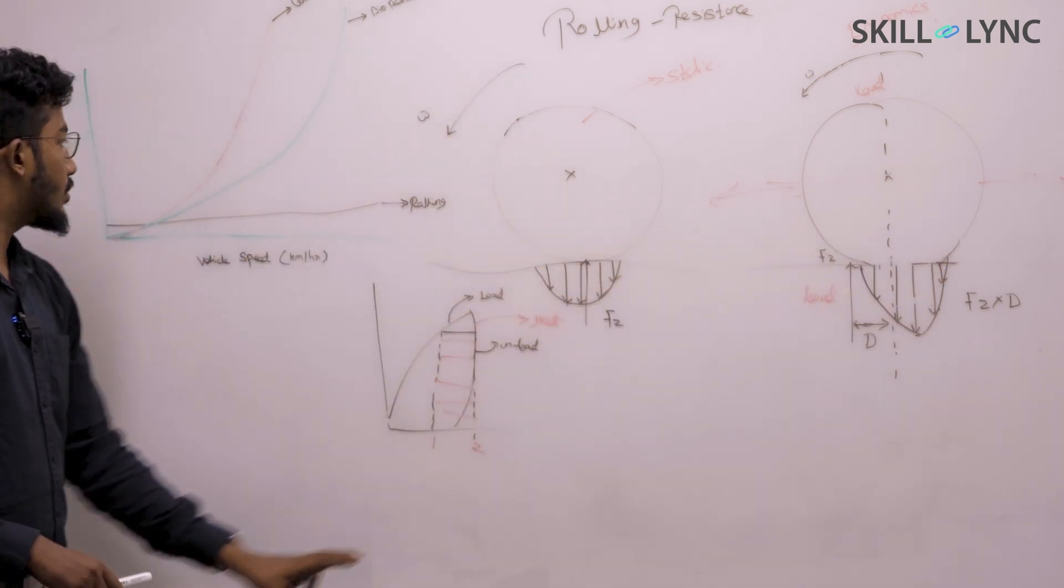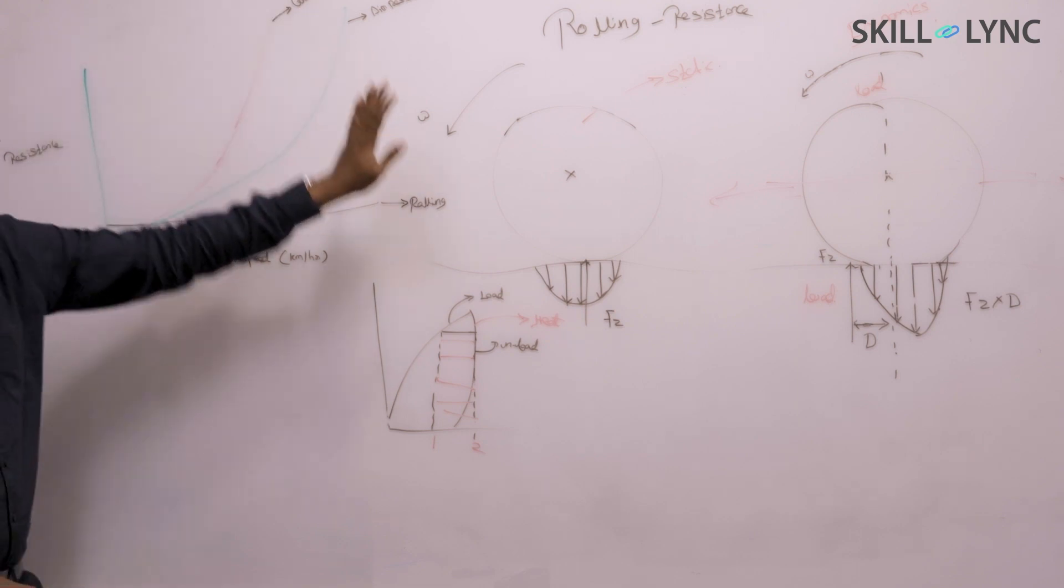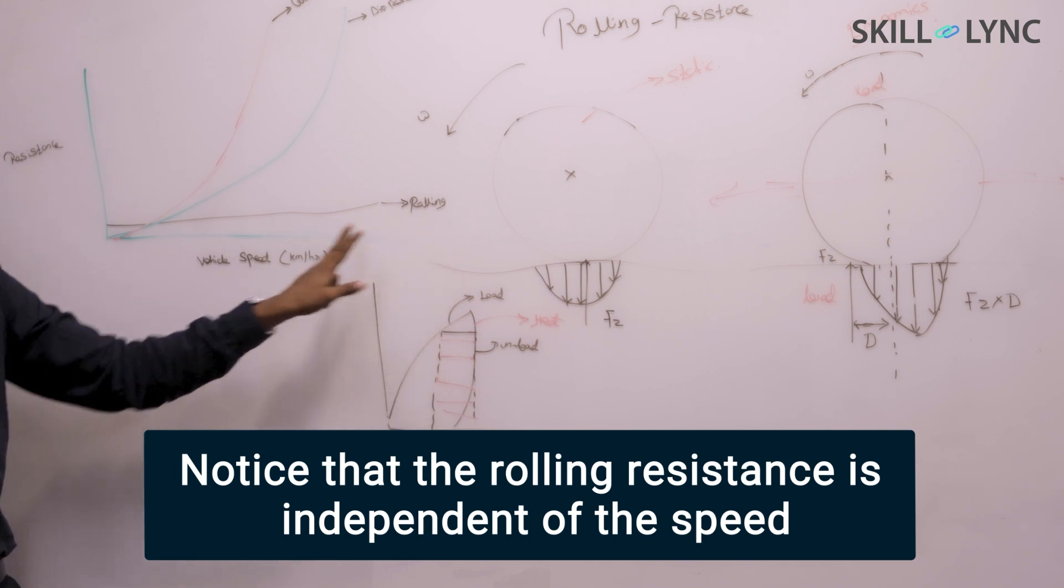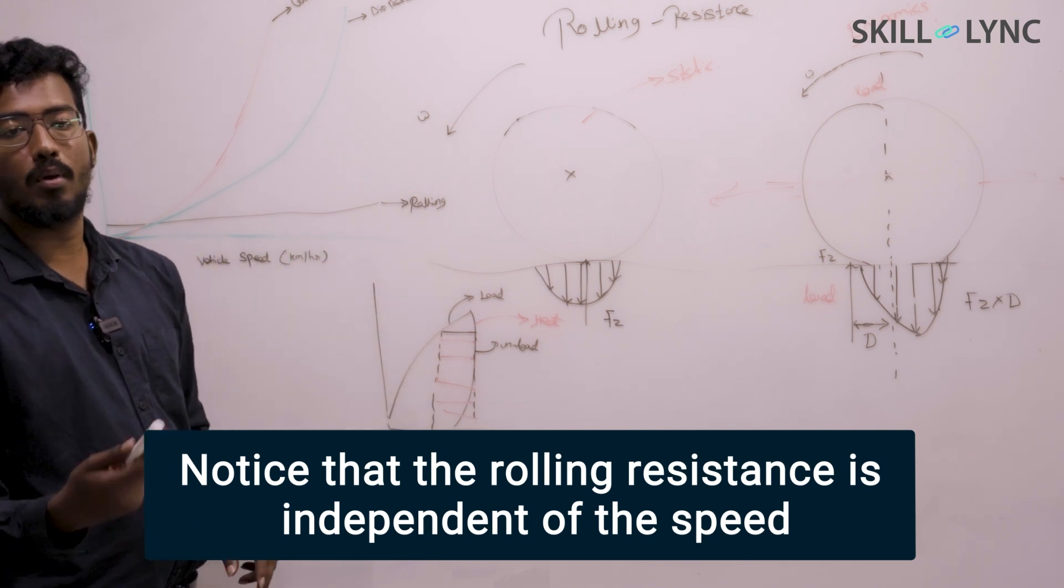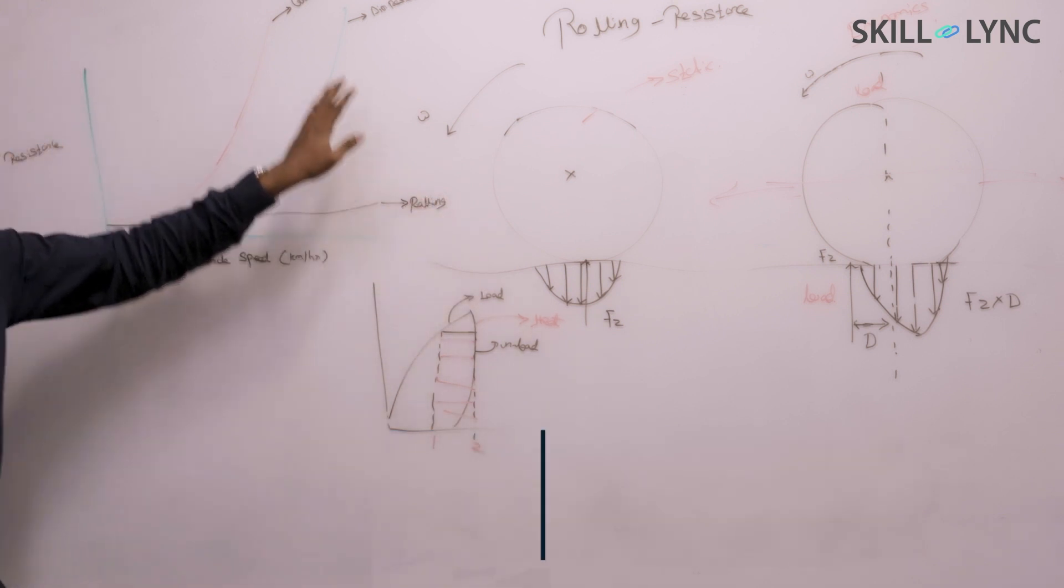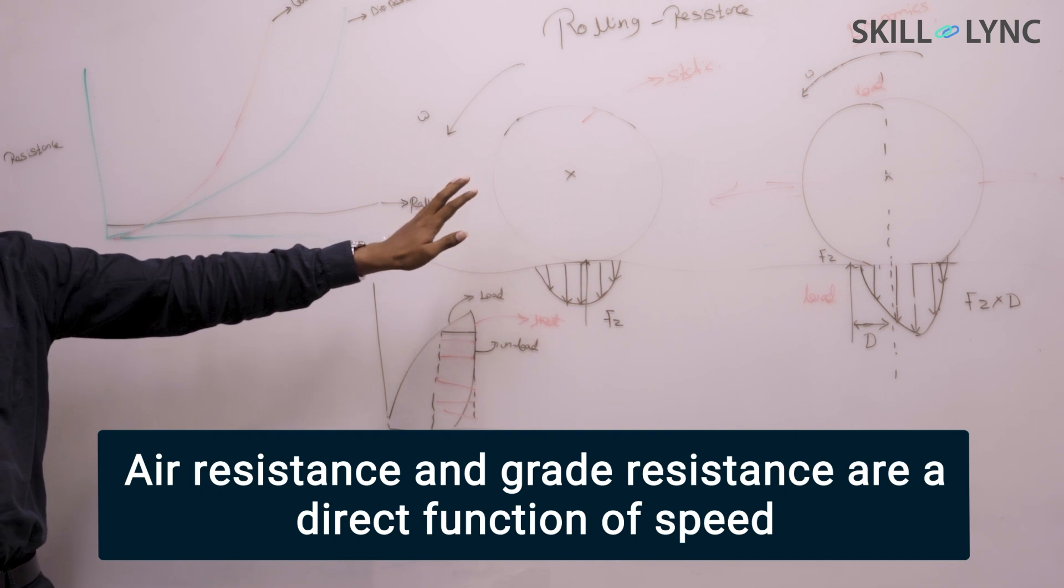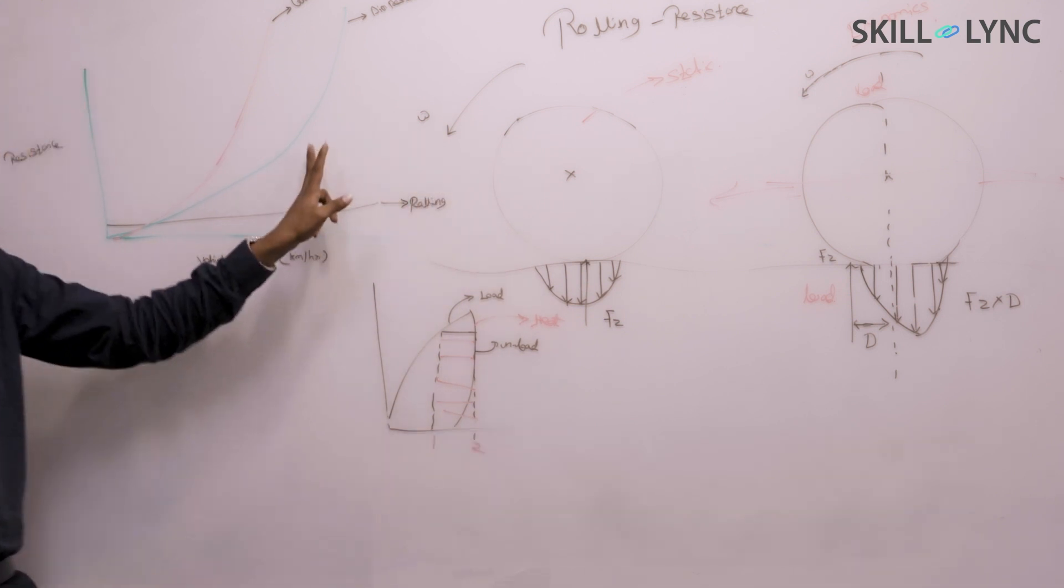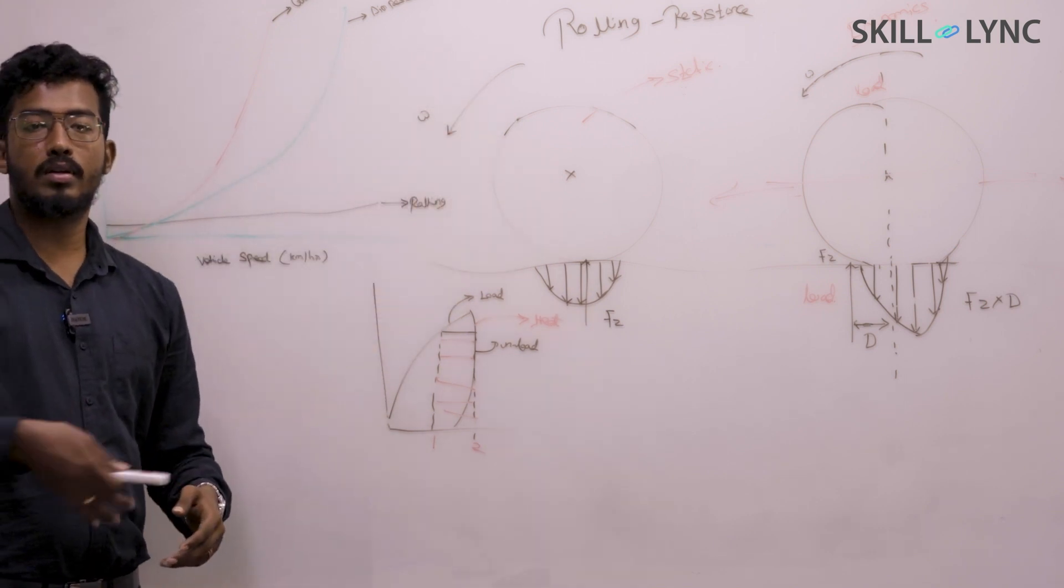To conclude, you're going to have a resistance curve on the overall map. You could see rolling resistance doesn't change with speed—that's something really important we can understand from this graph. Whereas you can see air resistance and grade resistance are a direct function of your vehicle speed. You can see as the speed increases, your resistance keeps spiking up.